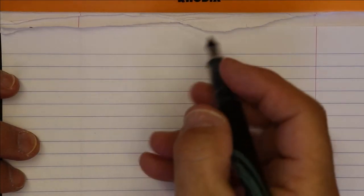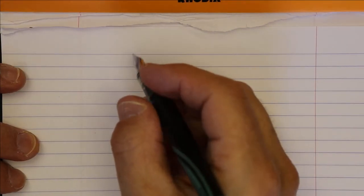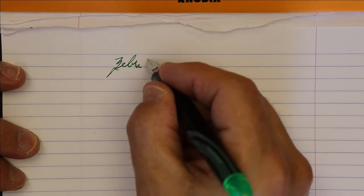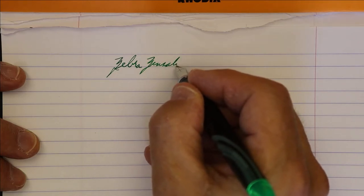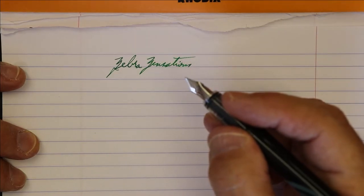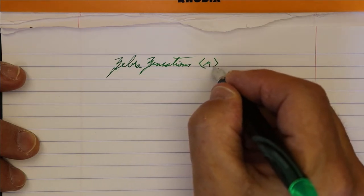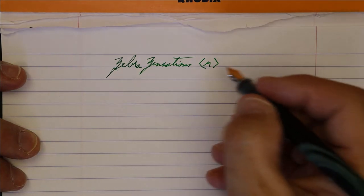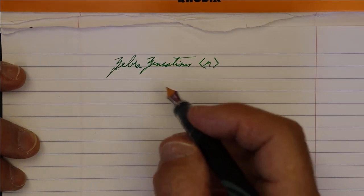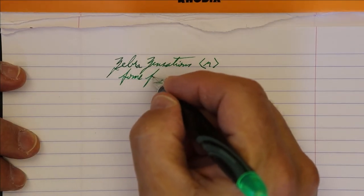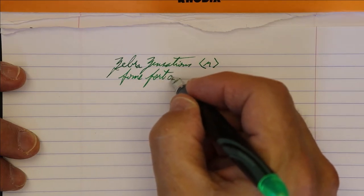And now for a writing sample of the Zebra Zensations fountain pen. This is a medium nib. Comes with these, you can only get a medium nib.